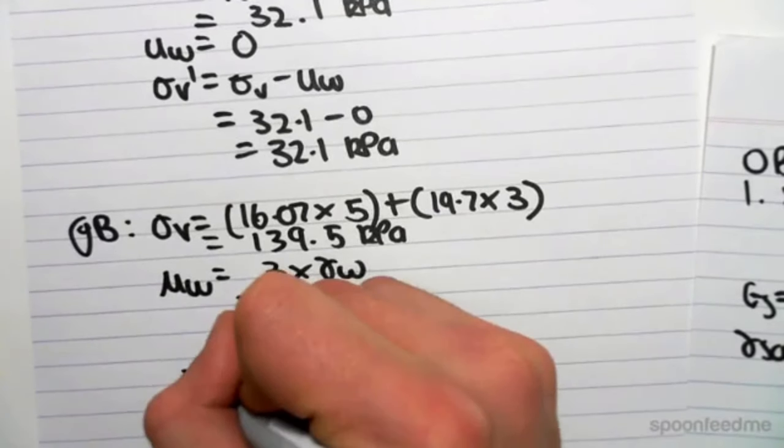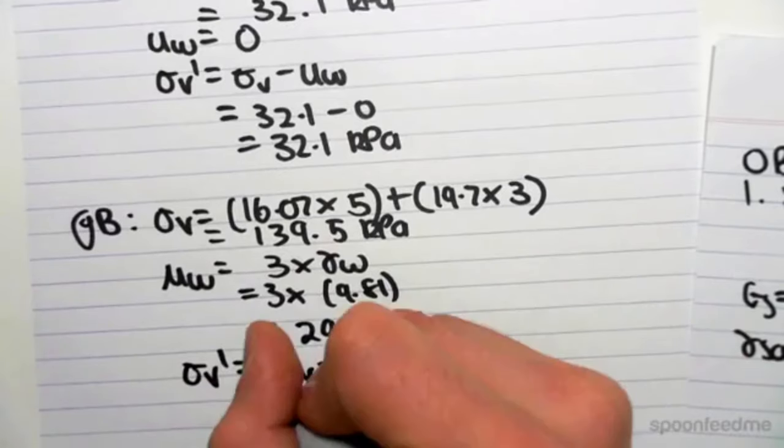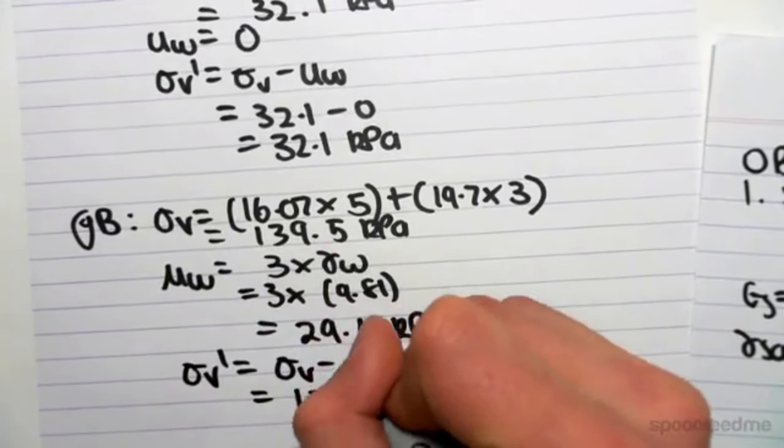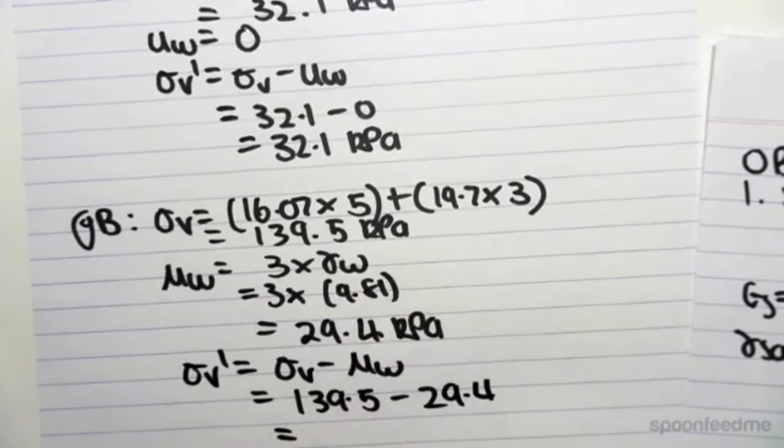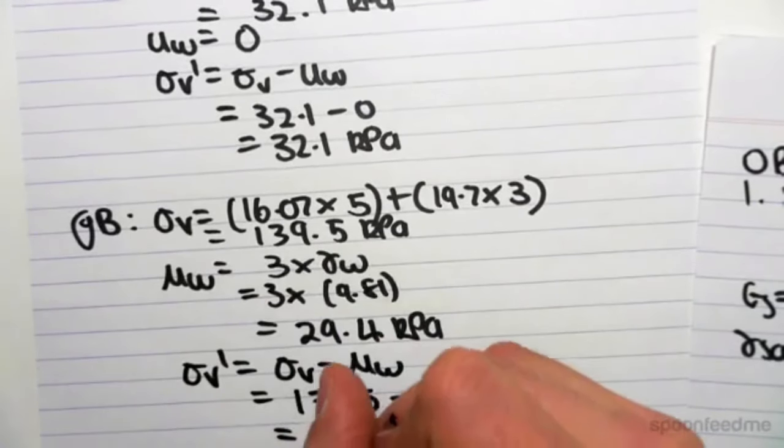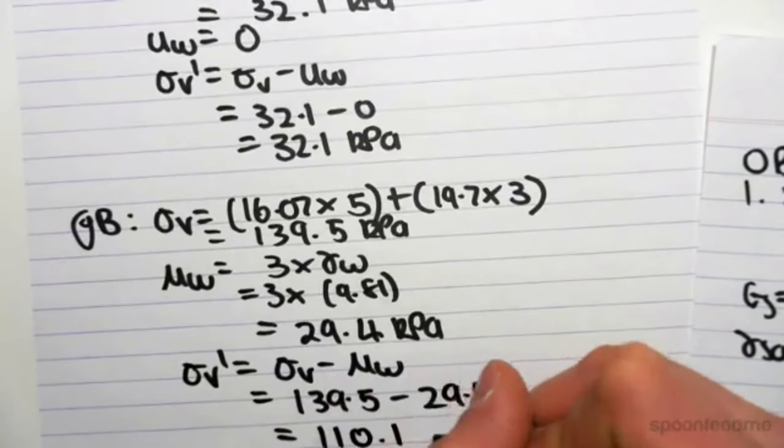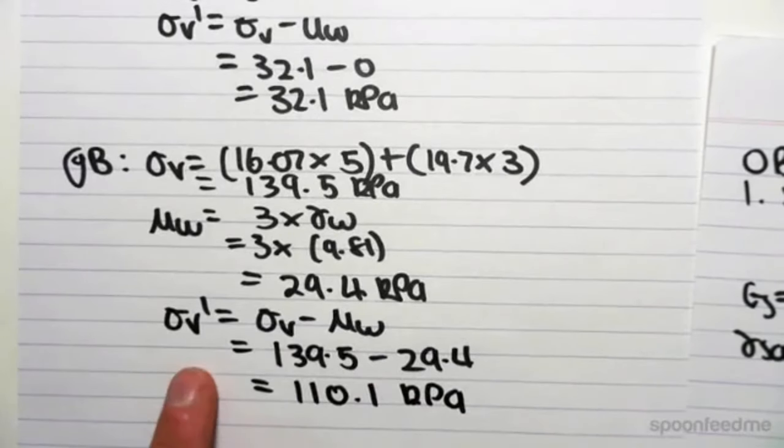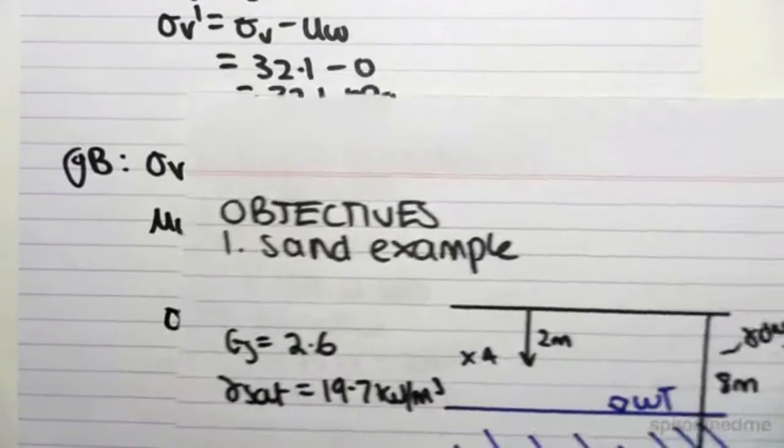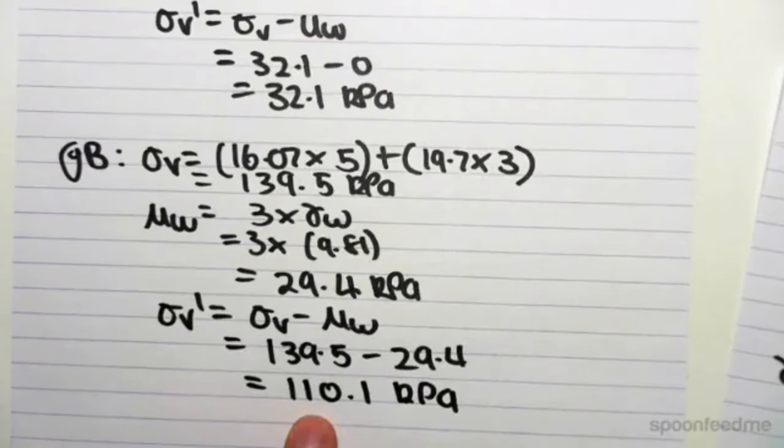Which means that our effective stress will be sigma V minus the pore water pressure, which will be 139.5 minus 29.4, and we get 110.1 kPa. So the effective stress at B is 110.1 kPa.